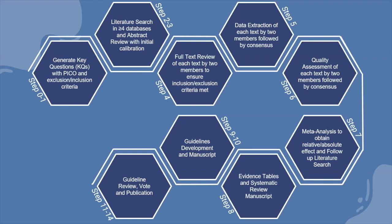Steps five and six include data extraction using standardized tables to extract all relevant data from the articles, and quality analysis to assess the quality of each text. We mainly used the Newcastle-Ottawa Scale because most of the texts were retrospective case-control or case series, though there were also a couple of cohort studies and RCTs that we used other methods to assess.